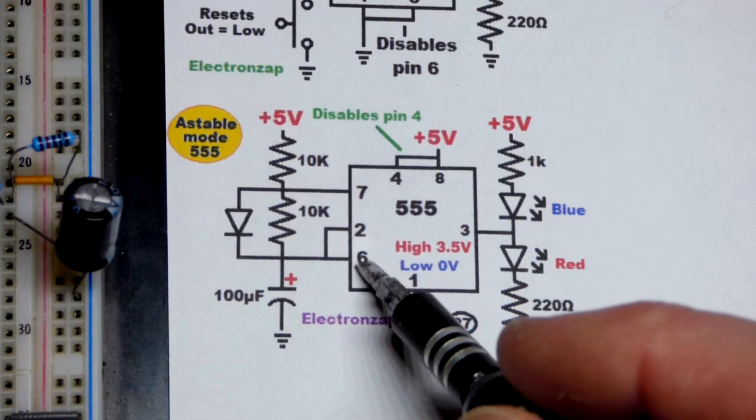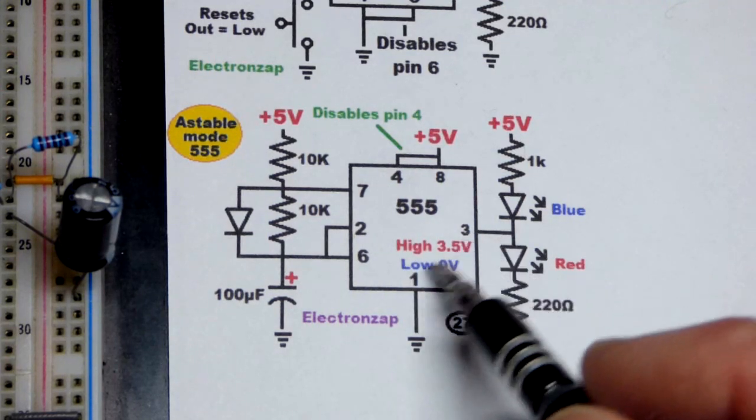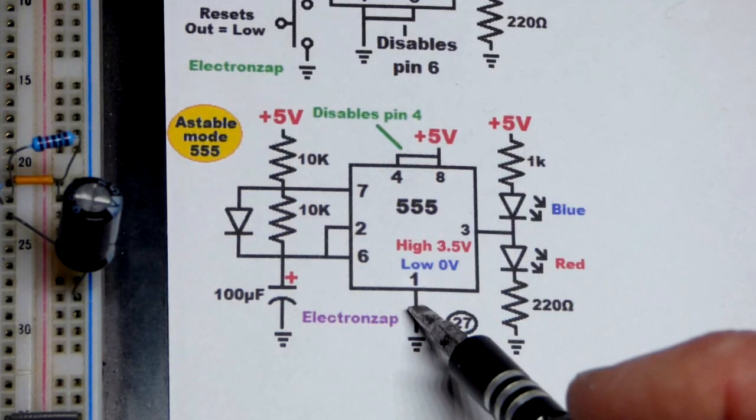When it gets to two-thirds of the supply voltage, pin 6 will sense that. Then pin 7 connects to ground, as does the output. Output goes low, blue LED lights up.